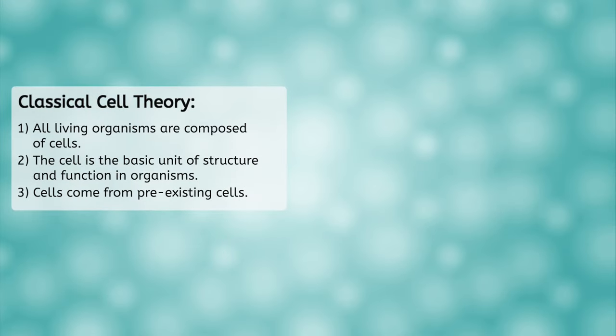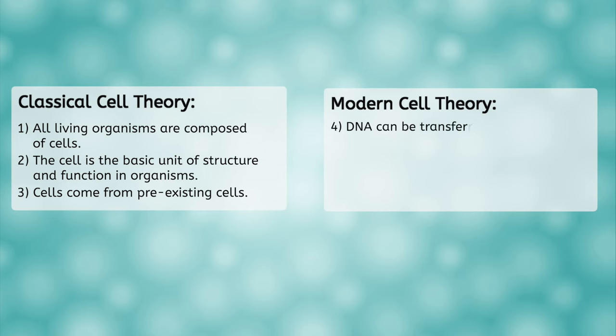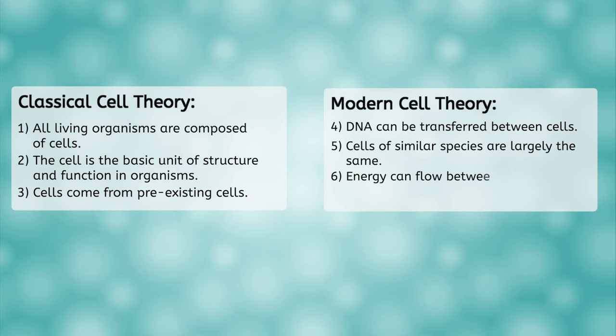The classical cell theory was established in the 1800s. I think it's safe to say we've learned a bit about cells since then. Do we need to add anything to it? It turns out, yes. We now have an additional set of tenets called the modern cell theory. They state that DNA can be transferred between cells, cells of similar species are largely the same, and that energy can flow between cells.